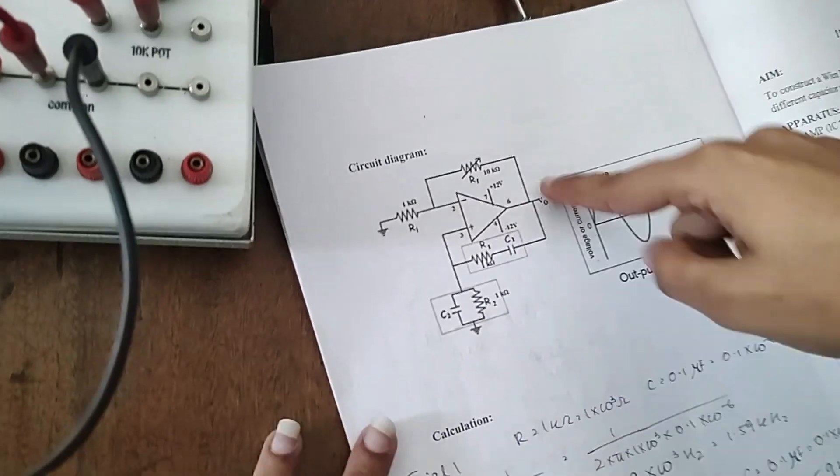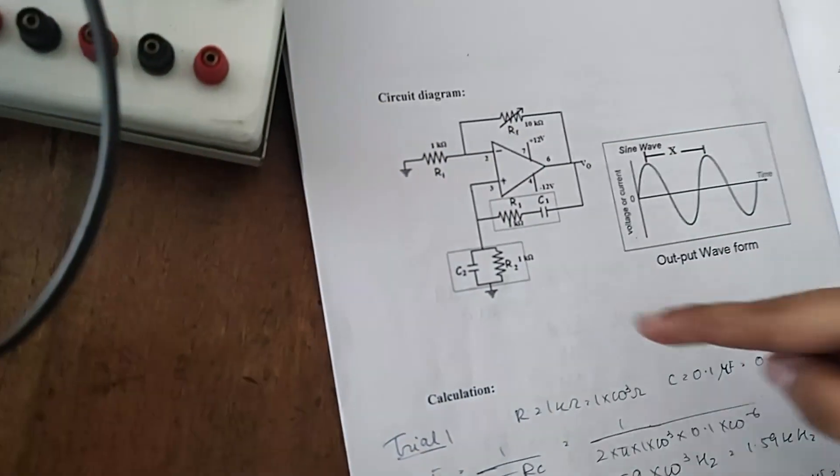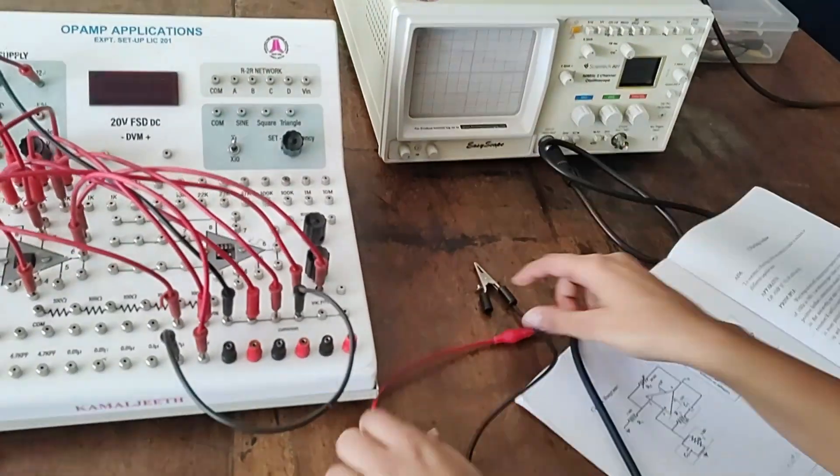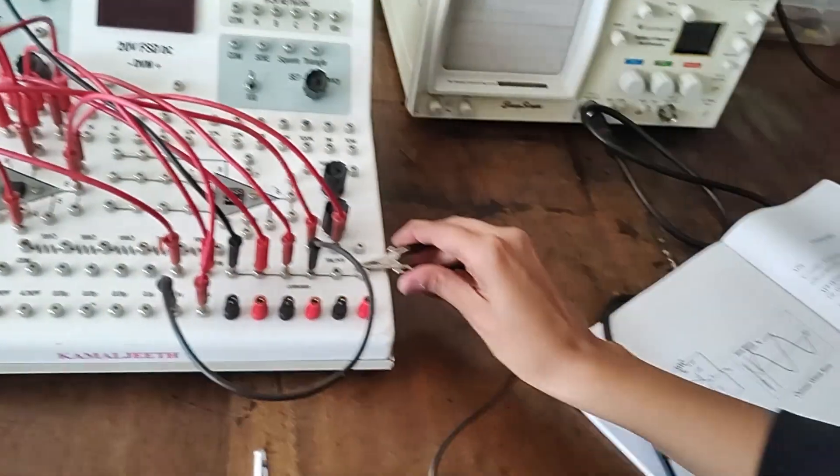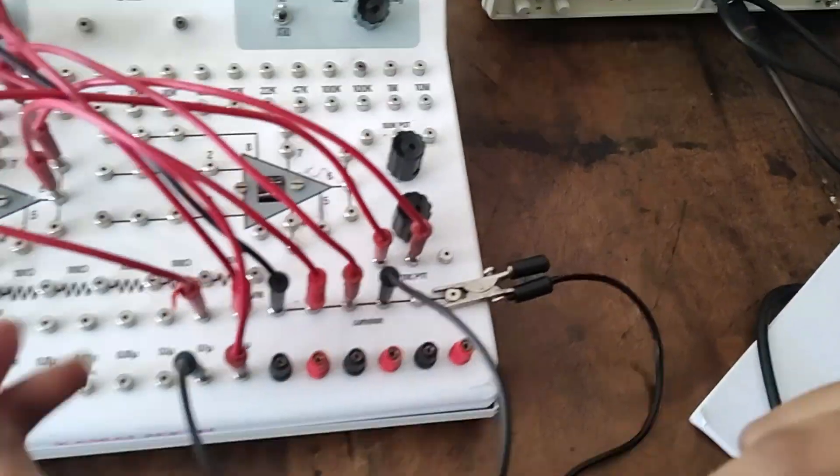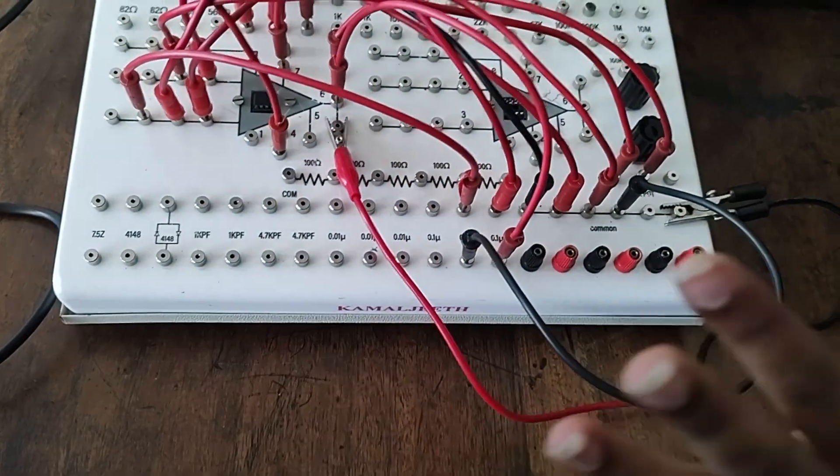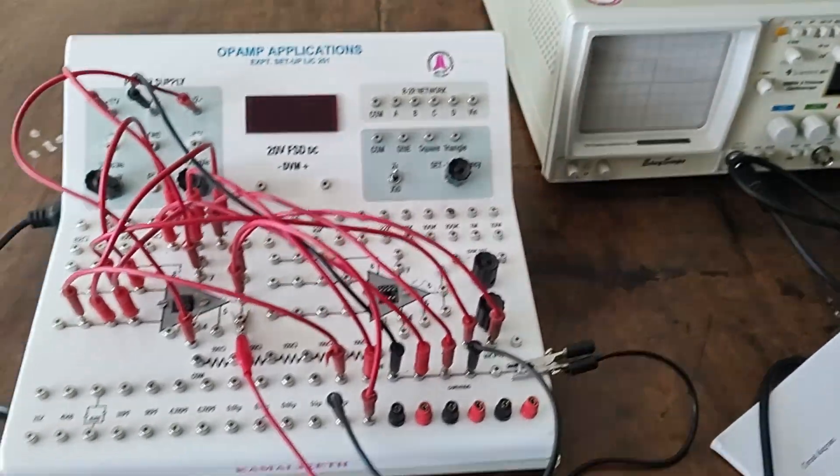Now, we're taking output at pin number 6 and ground, so we'll use the CRO for that. I've already connected it to channel 1. The output is between the common ground and pin number 6. Now when we turn this on...